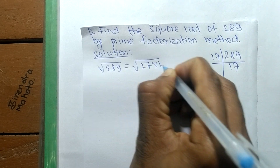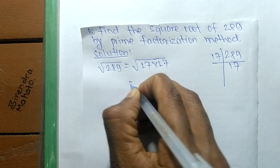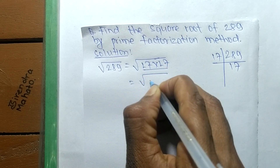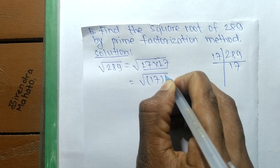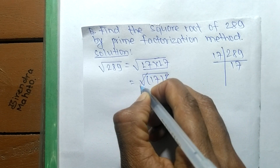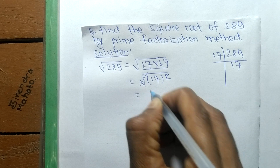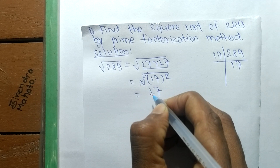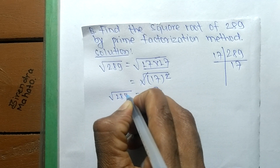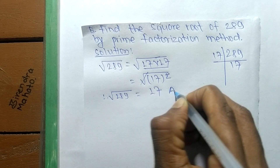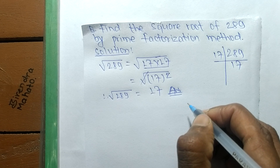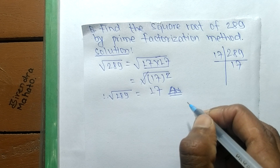We write 17 times 17, which means it is 17 squared. The square root and the square cancel each other, and the number that comes out is 17. So the square root of 289 is equal to 17. That's all for today — thanks for watching.